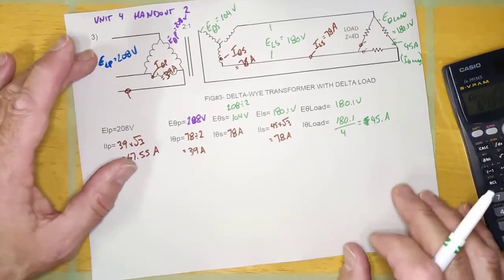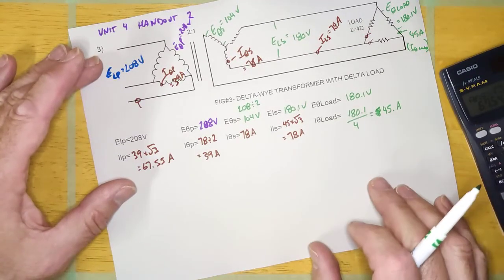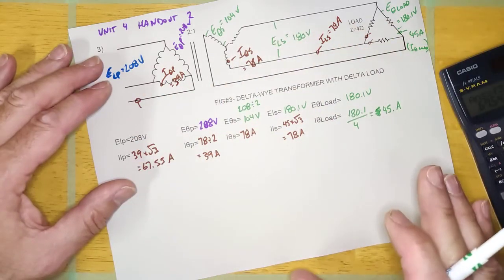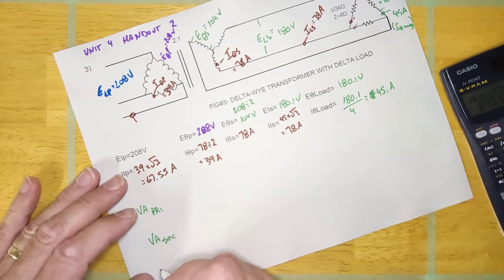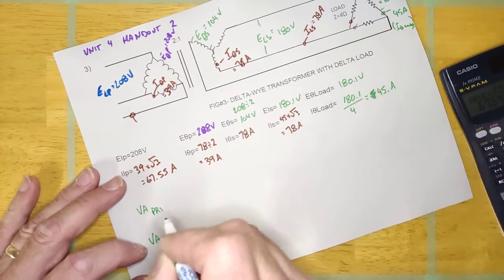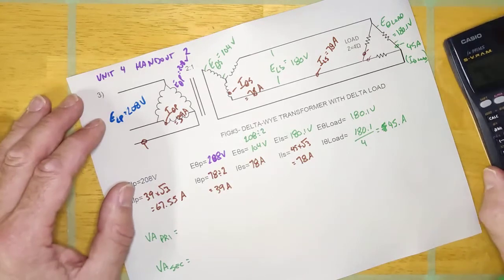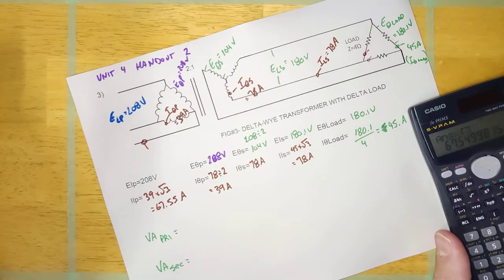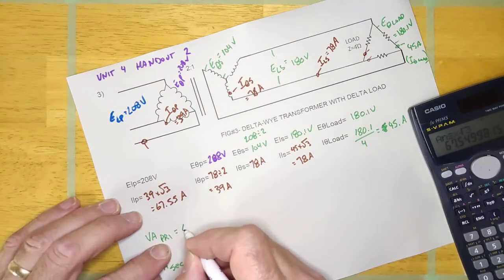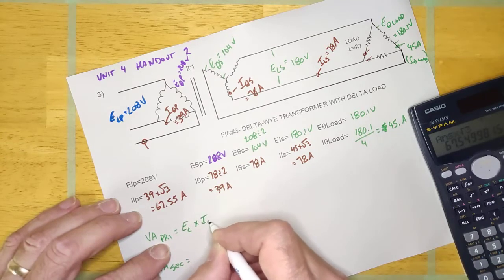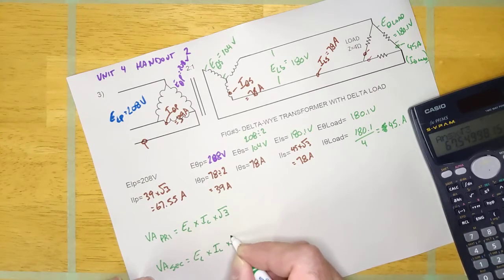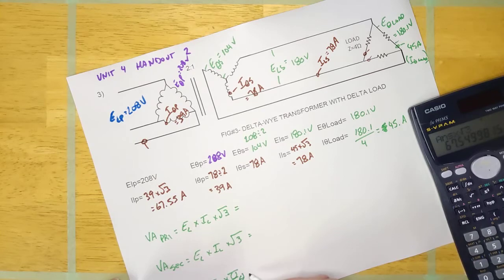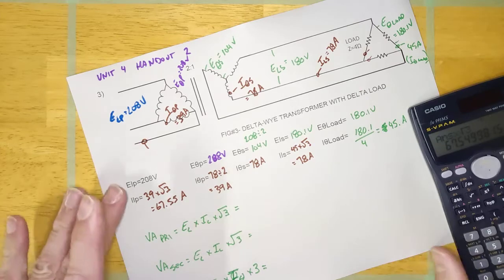When you do these on the test, you must calculate the VA — freaking everywhere. You're going to calculate the VA at the primary, at the secondary, and at the load. You have two different formulas for VA: one uses line values, and one uses phase values. Use line voltage times line current times √3 for the secondary, and phase voltage times phase current times 3 for the load, and I'll tell you why.